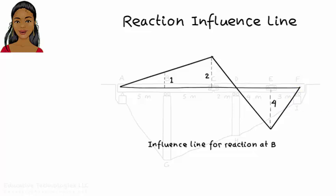A visual inspection of the diagram reveals that the absolute maximum reaction at B occurs when the load is at E. Since the influence line is drawn for a unit moving load, we must multiply the values given by the diagram by the actual magnitude of the load in order to obtain the correct reaction values.